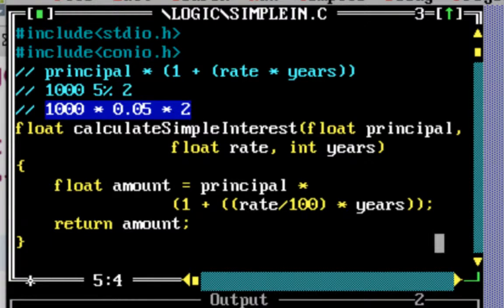So this is the amount of interest that needs to be charged. That's basically, thousand into two is two thousand, into 0.05, so that's 0.1, that's hundred rupees, so hundred units.